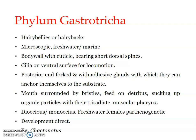Gastrotricha includes a very small group of worm-like, bilaterally symmetrical, unsegmented aquatic animals. They possess a conspicuous spiny cuticular covering and two adhesive caudal tubes. Their bodies are microscopic; mostly freshwater but marine forms also exist. They have a forked tail posteriorly with a pair of adhesive tubes.